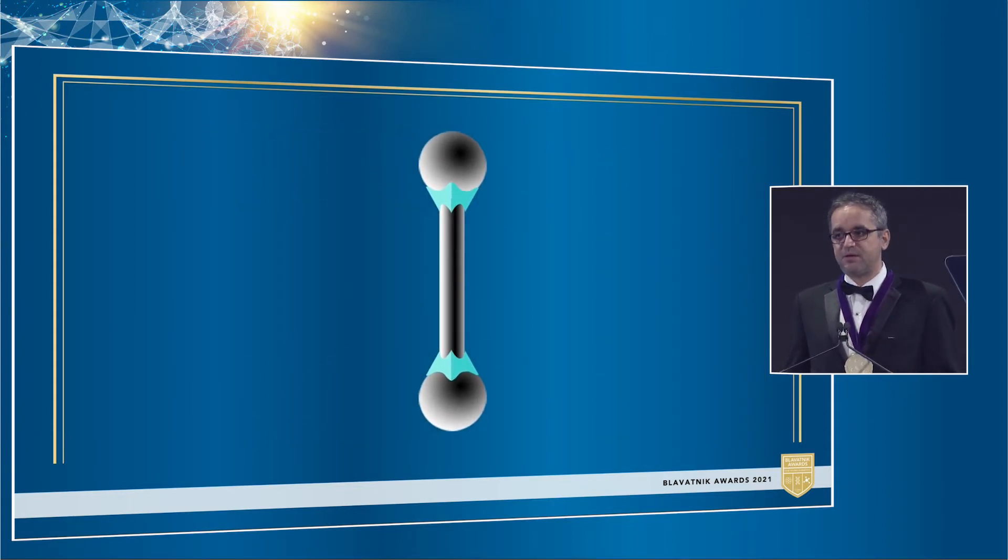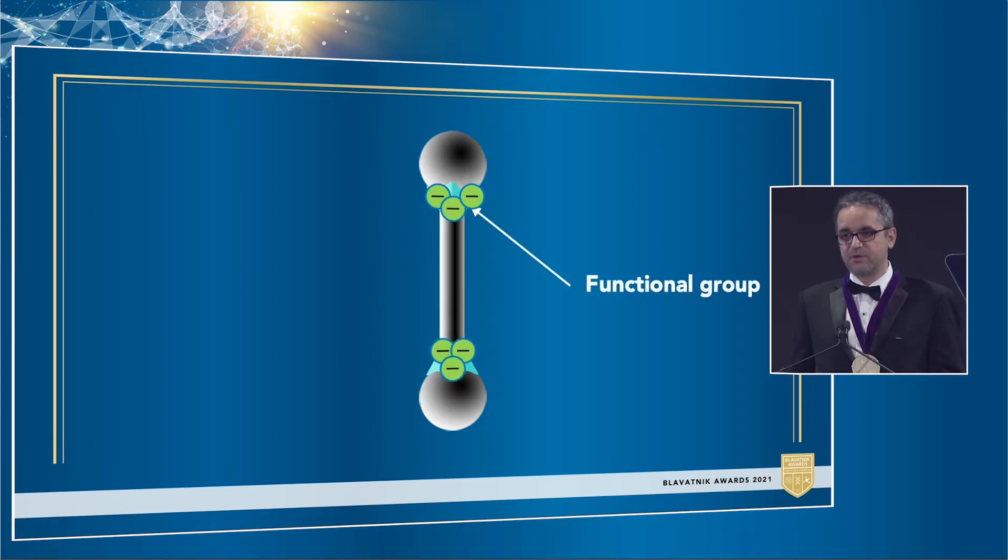So let's think about how to make MOFs conducting by looking at these individual molecules. For electricity to flow, we need charges. Here, negatively charged electrons to be able to move freely through the molecule. Now we can get charges in the metal and even in the organic strand. But they get stuck at the junction between the metal and the linker. So this junction is called a functional group. When I started my research lab, I wanted to find a way to clear this roadblock which would make these super sponges electrically conductive.